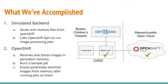What we have built together is a proof of concept that shows a full end-to-end of running a job on the CRIS backend on the cloud. The simulated backend stands as a model of the existing backend. We were successfully able to send and receive files from OpenShift, as well as call OpenShift's API to run the image processing, and we set up a standard protocol for calling OpenShift.